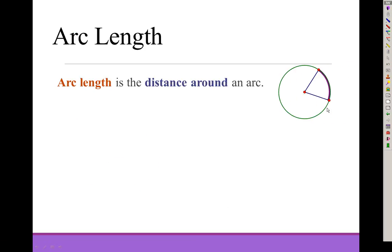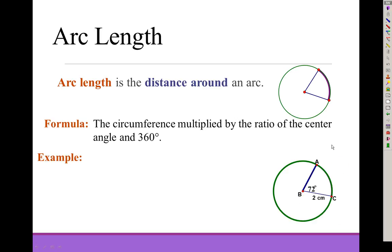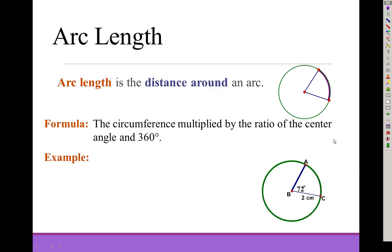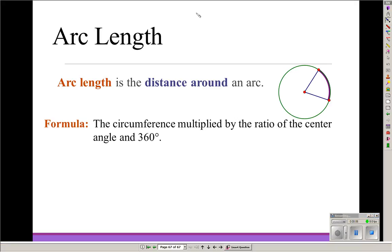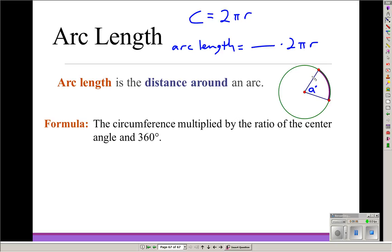Arc length is not about degrees — it's the actual distance around an arc, as if you measured it with a ruler. It's part of the circumference, not the whole circumference. Using the circumference formula 2πr, arc length is only a fraction of that: the fraction is the central angle measure (a) over 360. So arc length equals (a/360) times 2πr.